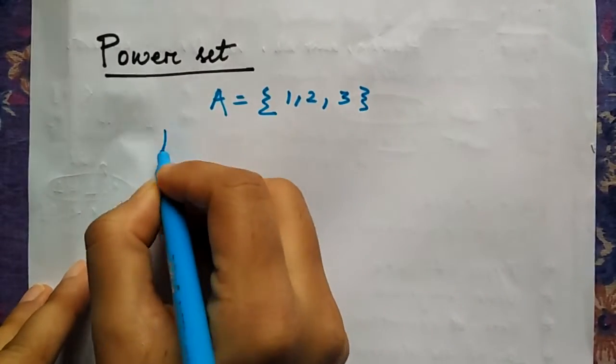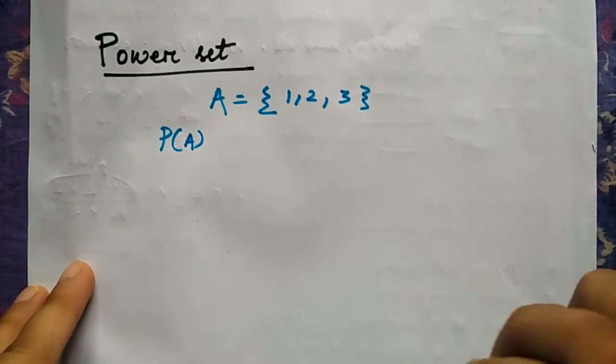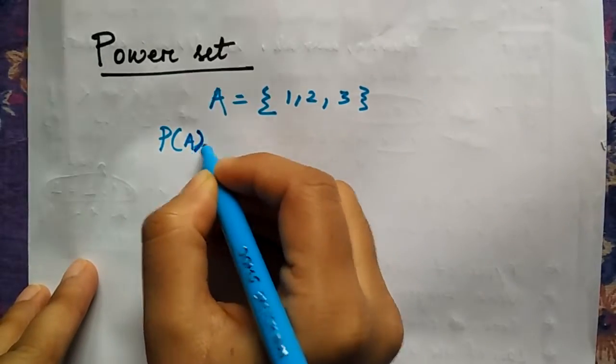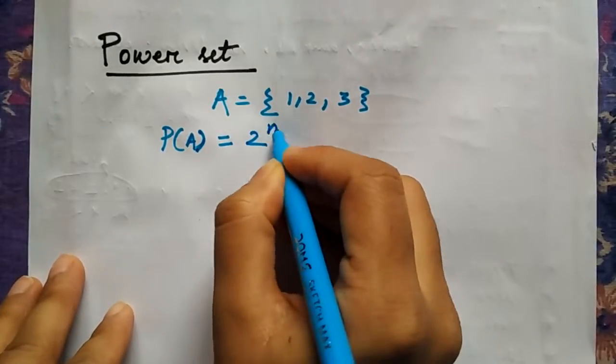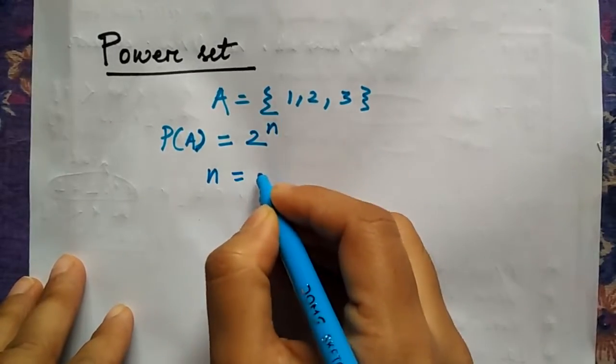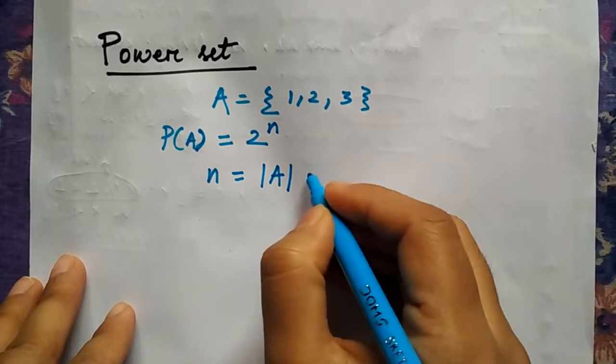Power set is always mentioned as P(A), and I told you in the previous video that the power set formula is 2 to the power n, where n is the mod of A.